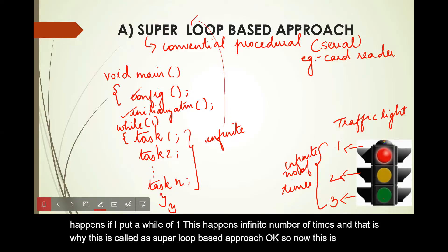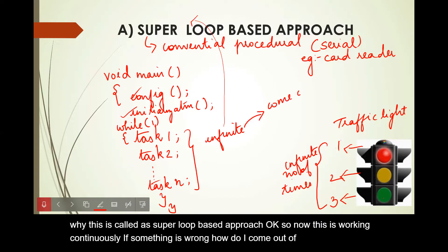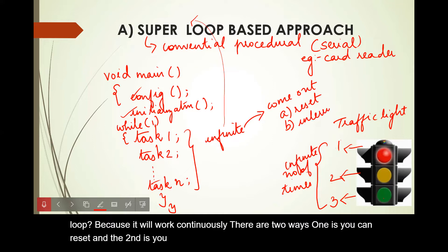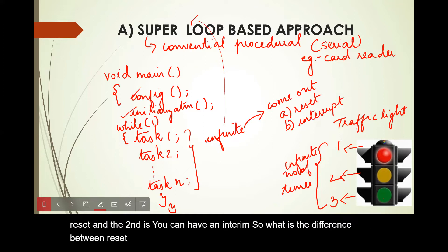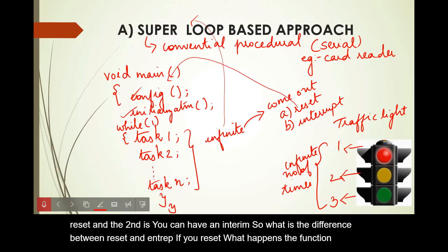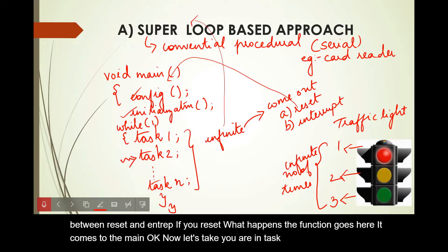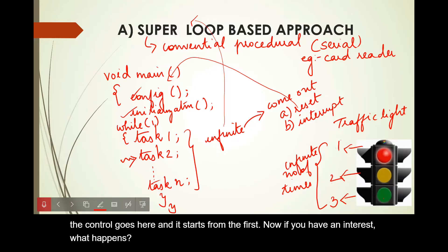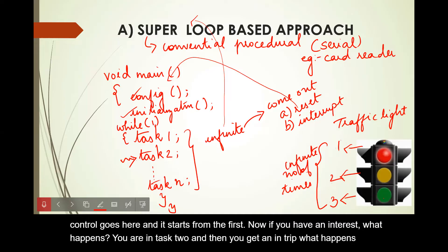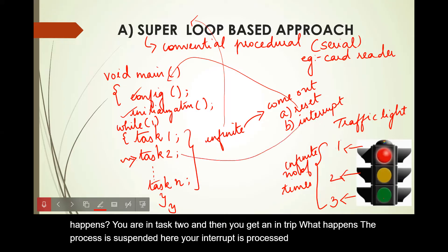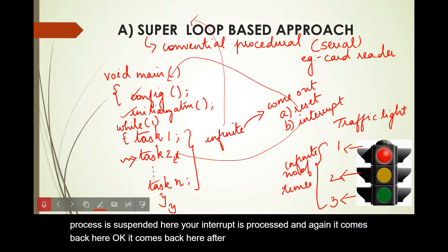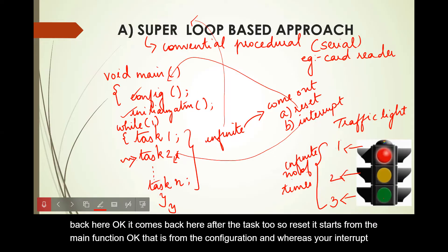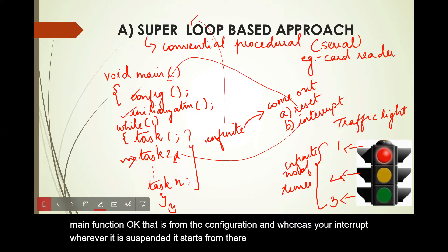This is working continuously. If something is wrong, how do I come out of this loop? There are two ways: one is reset, and the second is interrupt. If you reset, the control goes to main and starts from the first. If you are in task two and get an interrupt, the process is suspended there, the interrupt is processed, and then it comes back to task two. So with reset it starts from the configuration in main, whereas with an interrupt it resumes from wherever it was suspended.